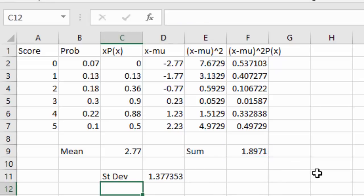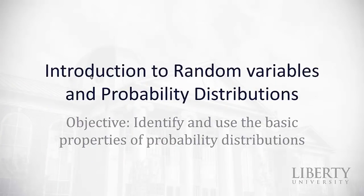It's going to round to 1.38, which is the exact same thing we got when we did it by hand. Hopefully this video was helpful as an introduction to random variables and probability distributions. And now you should be able to identify and use those basic properties of the probability distributions.